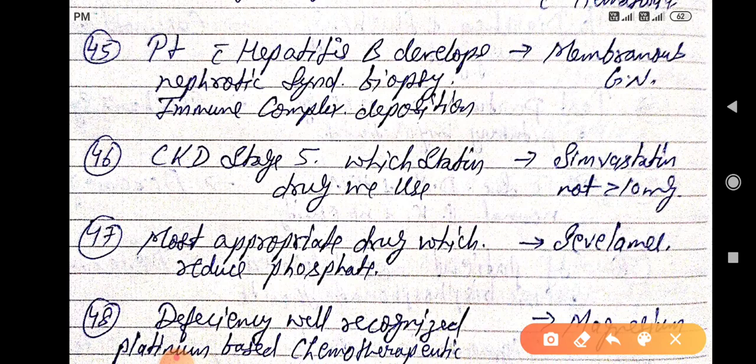Patient with hepatitis B develops nephrotic syndrome, biopsy, immune complex deposition. It is associated with membranous glomerulonephritis.